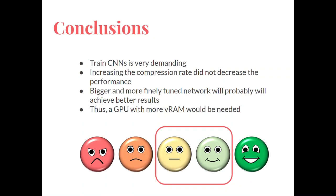And our conclusions are that training CNNs is a very demanding task, also that increasing the compression ratio didn't decrease the performance of the model, so it doesn't seem to be a problem of the compression itself, but of the reconstruction of the compressed space. Also, we can conclude that a bigger and more finely tuned network will probably achieve better results, and also, we would in this case need a GPU with more video RAM, and ideally, that has more computational power in order to train it faster.